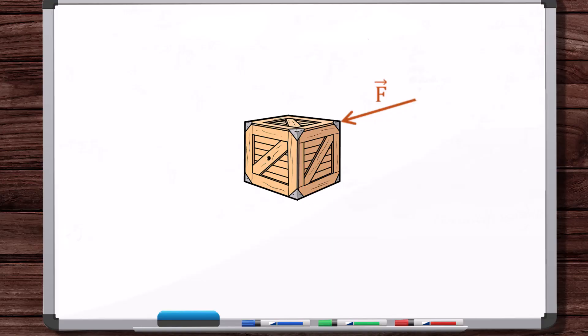then the principle of transmissibility of forces, or the fact that we can treat this force as a sliding vector in this case, says that we could also apply this force over here. Apply the force to the crate, but over here. And what that means is that if we solved this system, then the resulting accelerations, spinning, everything, are going to be exactly the same.